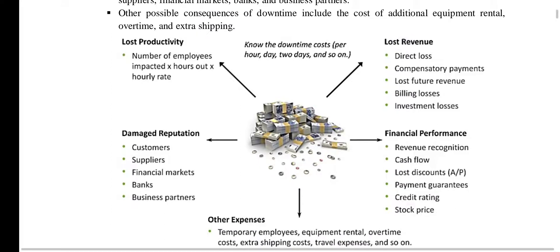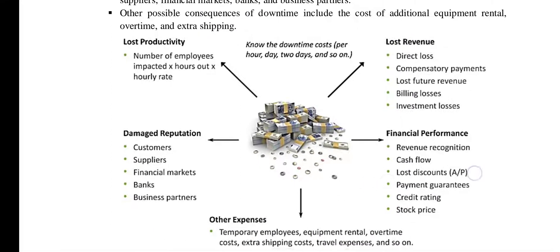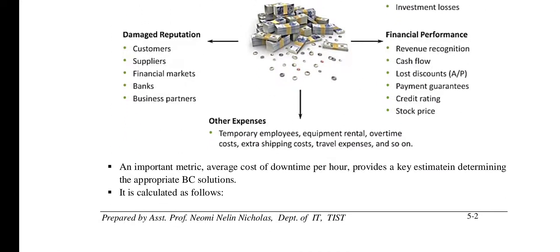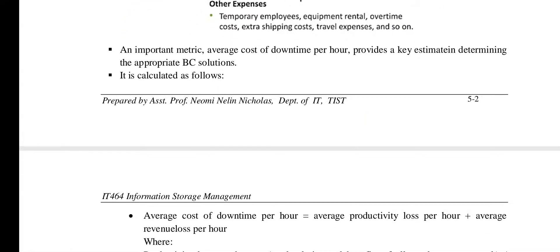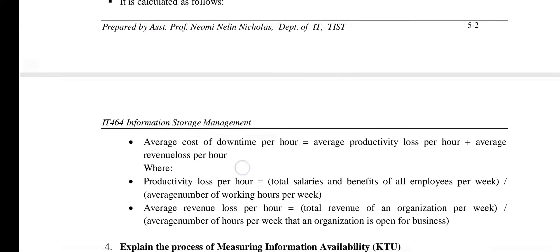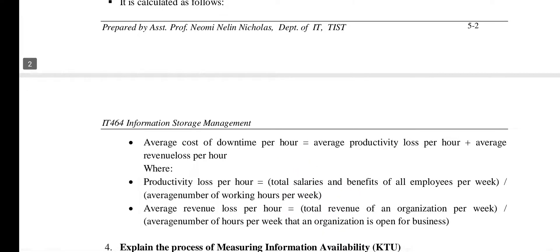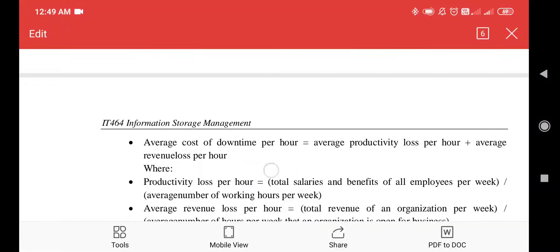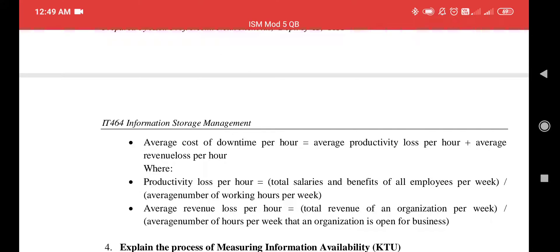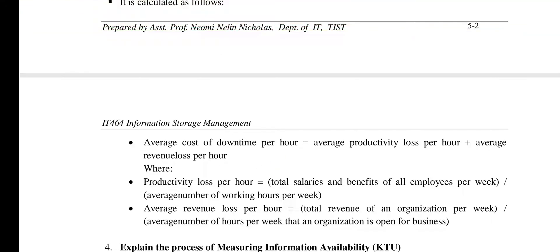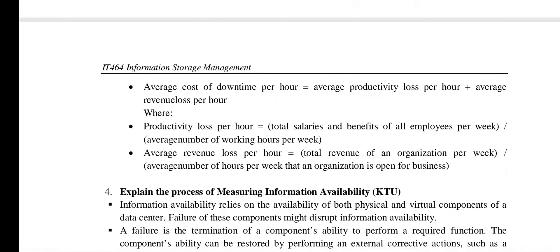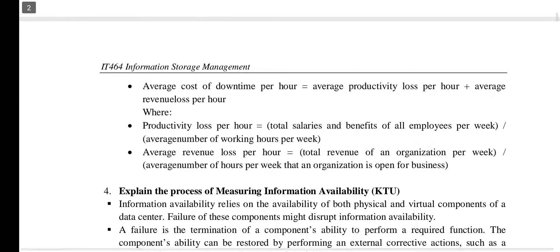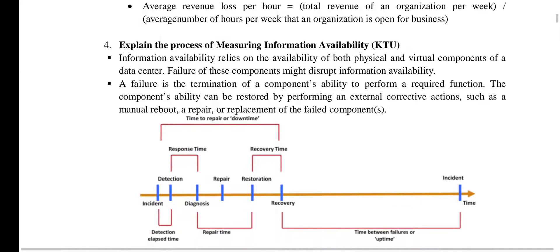There is a pictorial representation for the EC study. The average cost of downtime per hour can be calculated as: average productivity loss per hour plus average revenue loss per hour. The concept of downtime is explained below, and this relates to measuring information availability.